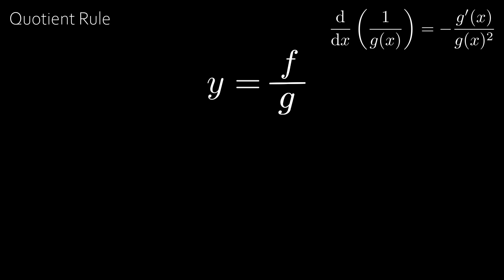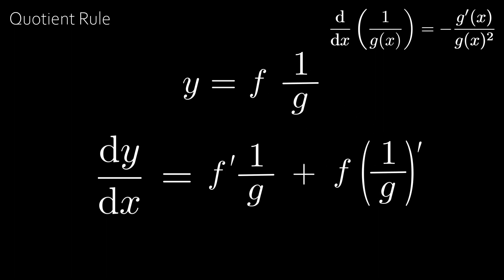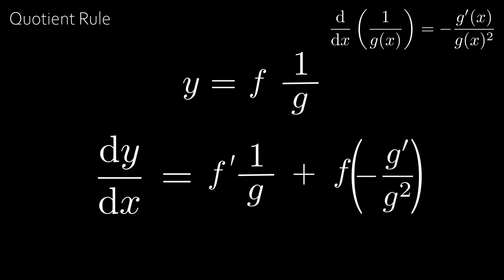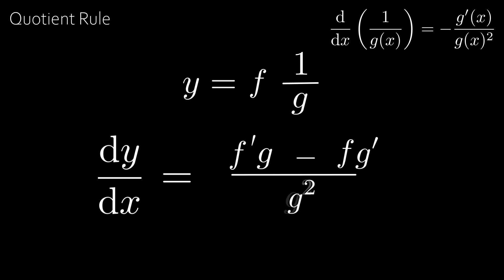Writing f/g as f·(1/g) and applying the product rule gives dy/dx = f'·(1/g) + f·(1/g)'. Since the derivative of 1/g is −g'/g², we take out the minus sign and multiply top and bottom by g for the left term to form a common denominator. This gives dy/dx = (f'g − fg') / g², which is the quotient rule.